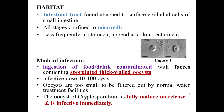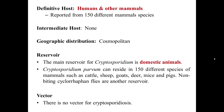The mode of infection is by ingestion of food or drinks contaminated with feces containing sporulated thick-walled oocysts. The infective dose is 10 to 100 oocysts. They are too small to be filtered by normal filtration techniques, and the oocysts of Cryptosporidium are fully mature on release and immediately infective. Definitive hosts are humans and other animals — it has been reported from 150 different mammal species.